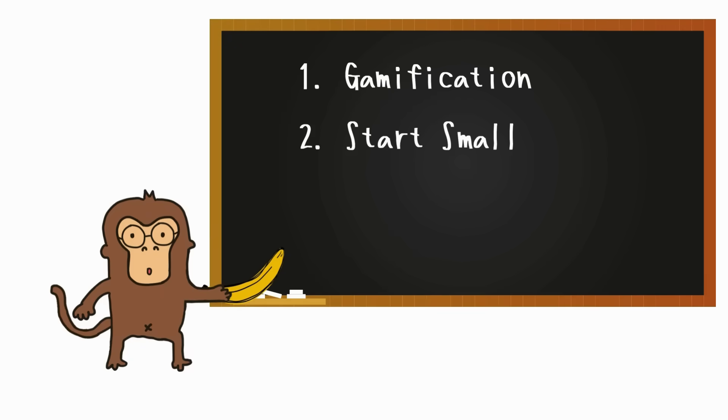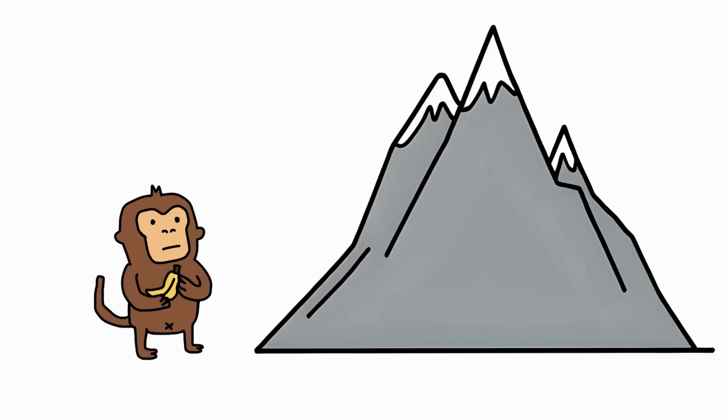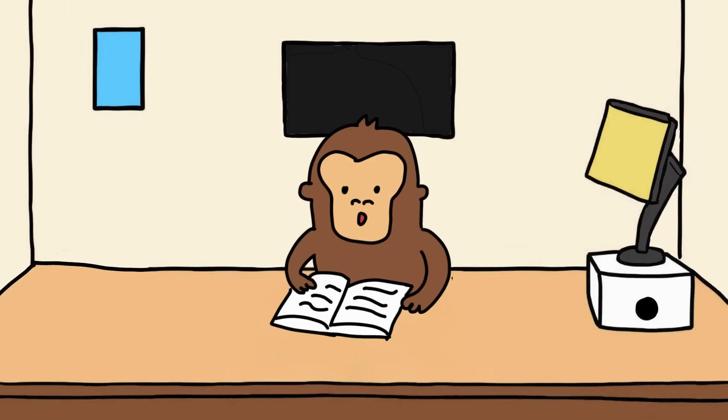Number 2: Start small. Monkey hates climbing mountains, but Monkey doesn't mind one small step. Trick. Monkey says, just do it for two minutes. Once Monkey starts, momentum kicks in, and he usually keeps going.